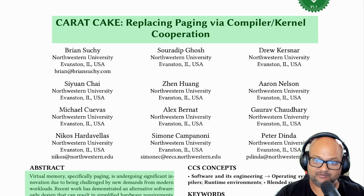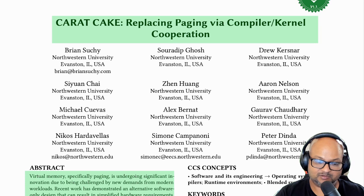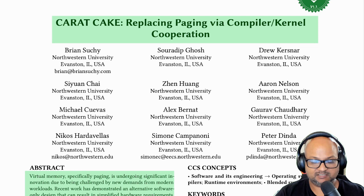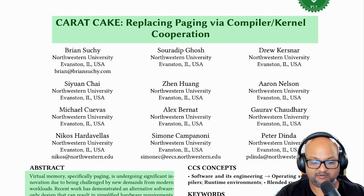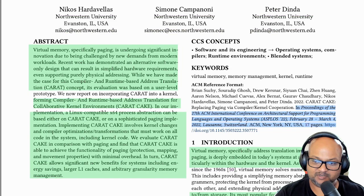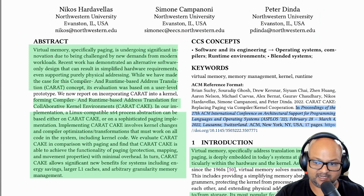Hi folks, welcome back. I hope you're all doing well. Today I want to take a look at a paper which asks the question of what would a system look like if you used only software for memory protection rather than all the existing hardware mechanisms that we find in modern microprocessors. This was published earlier this year at ASPLOS, the conference for Architectural Support for Programming Languages and Operating Systems.